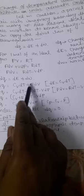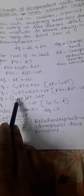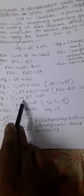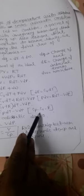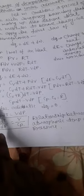Substituting the value of p·dV into the equation: dq equal to Cv·dT plus R·dT minus V·dp, which gives dq equal to (Cv + R)·dT minus V·dp. Using the relation Cp minus Cv equal to R, where Cp is the molar heat capacity at constant pressure, we can write dq equal to Cp·dT minus V·dp.